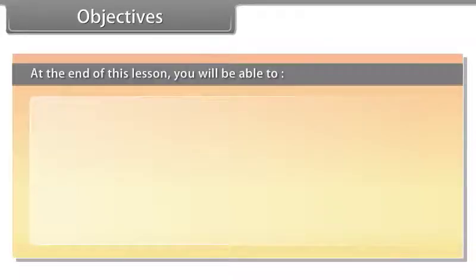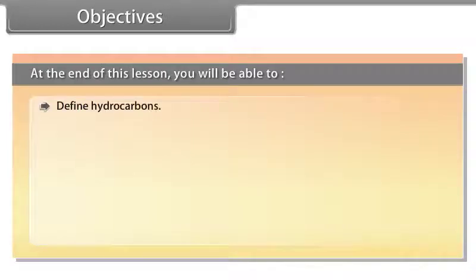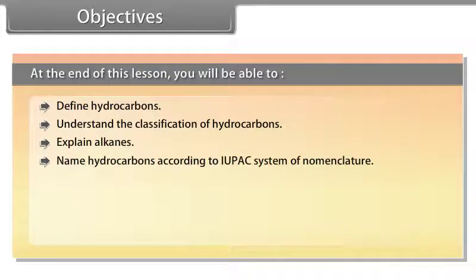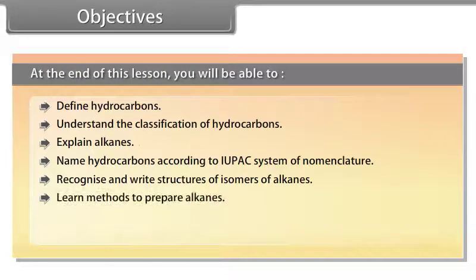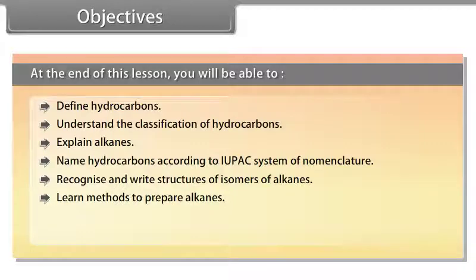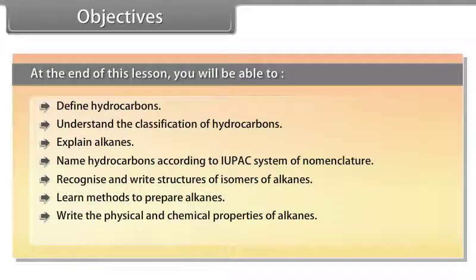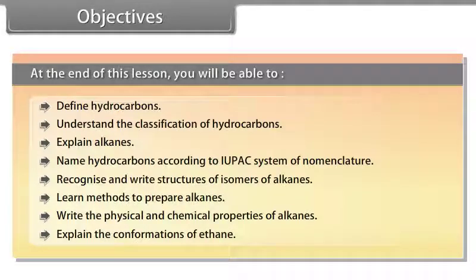Objectives: At the end of this lesson, you will be able to define hydrocarbons, understand the classification of hydrocarbons, explain alkanes, name hydrocarbons according to IUPAC system of nomenclature, recognize and write structure of isomers of alkanes, learn methods to prepare alkanes, write the physical and chemical properties of alkanes, and explain the conformations of ethane.